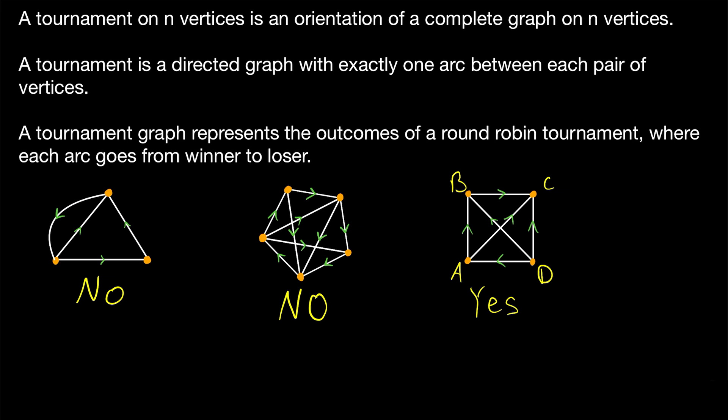So that's what a tournament is. It's a directed graph where each pair of vertices has exactly one arc between them — just taking a complete graph and assigning a direction to each edge. What those directions are doesn't matter; all that matters is that there's exactly one directed edge between each pair.